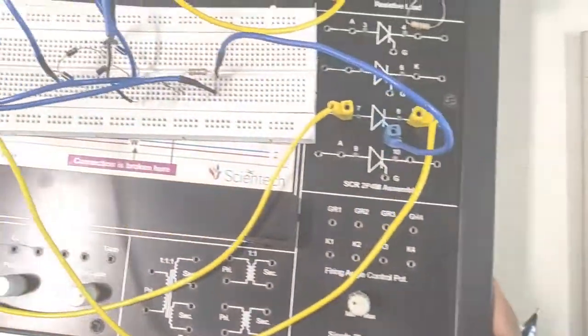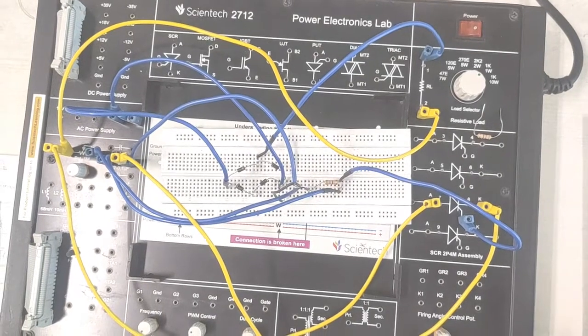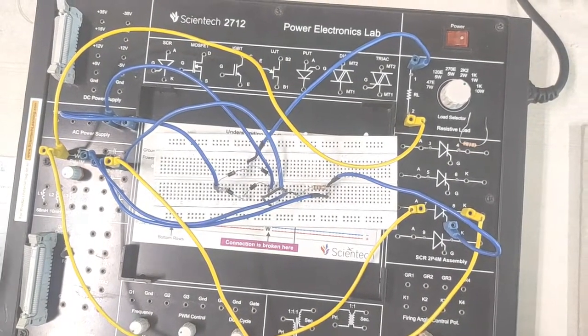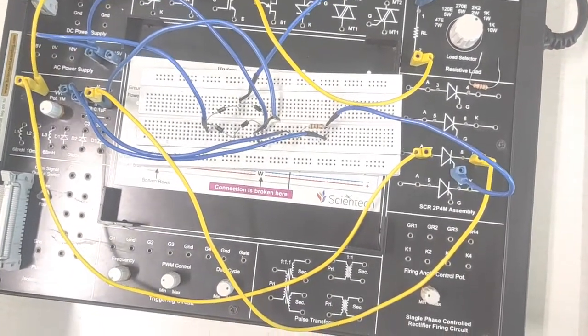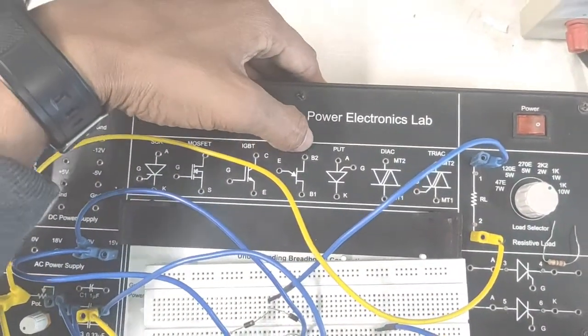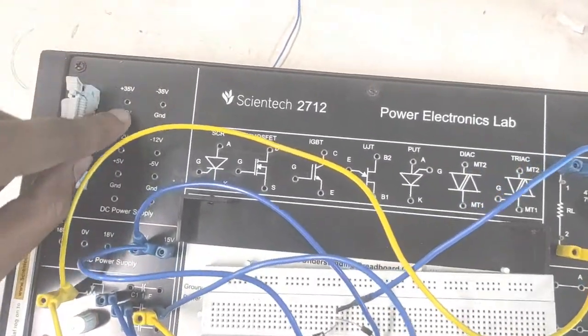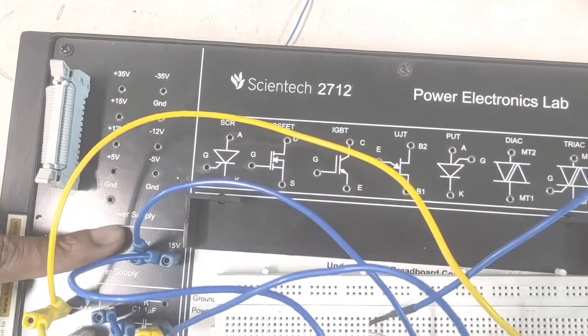This one is Syntec 2712 lab trainer kit. This kit is used for multipurpose. It has power devices like SCR, MOSFET, IGBT, UJT, PUT, diac, triac and it has also DC power supply and AC power supply.